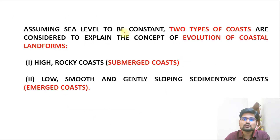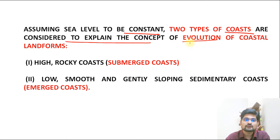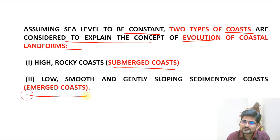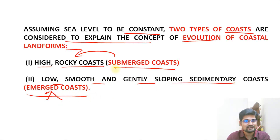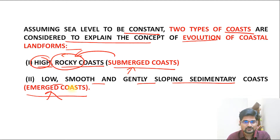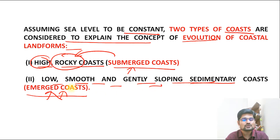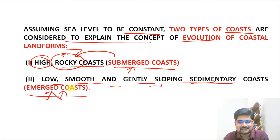Assuming sea level to be constant, two types of coasts are considered in the evolution of coastal landforms: submerged coasts and emerged coasts. Submerged coasts are high and rocky. Low, smooth, and gently sloping sedimentary coasts are called emerged coasts. Accordingly, the features formed differ depending on whether the coast is submerged or emerged in nature.